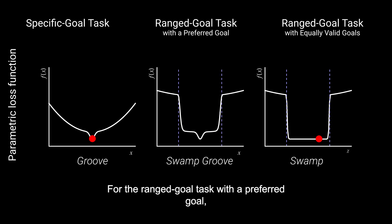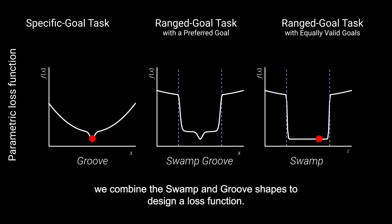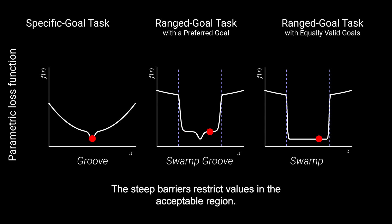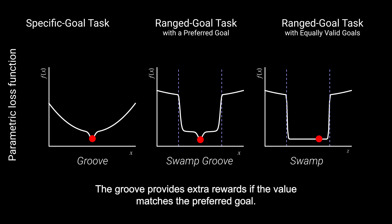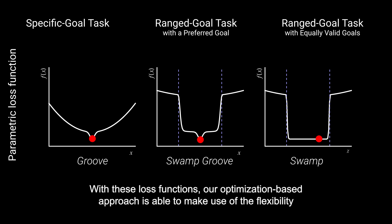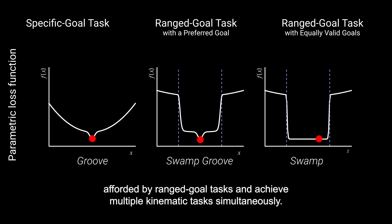For the range goal tasks with a preferred goal, we combine the step and groove shapes to design a loss function. The steep barrier restricts values in the acceptable region, and the groove provides extra rewards if the value matches the preferred goal. With these loss functions, our optimization-based approach is able to make use of the flexibility afforded by range goal tasks and achieve multiple kinematic tasks simultaneously.